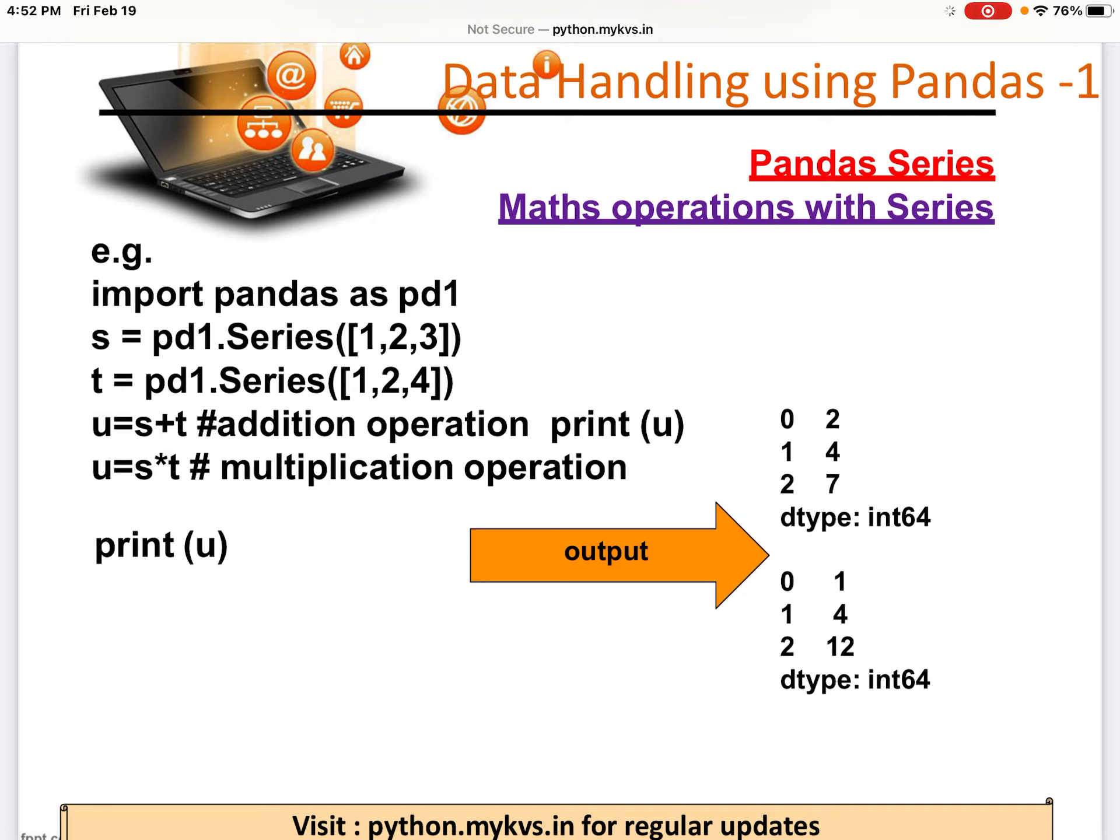First of all, we will see the first output. What we are doing here: we have defined two different Series. s = pd1.Series([1,2,3]) and t = pd1.Series([1,2,4]). Now see what is happening.